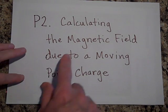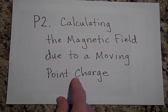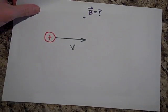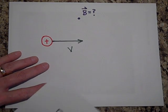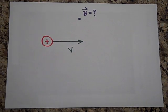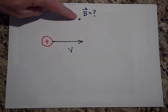So I want to tell you about calculating the magnetic field due to a moving point charge. So here's a moving point charge. It's moving to the right. It's got a speed V and what we want to find is we want to find the magnetic field right here.